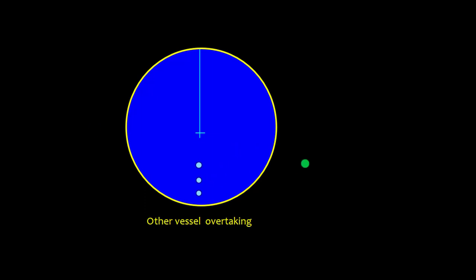Another overtaking scenario: another vessel is overtaking you from astern. You take at least three observations, bearing is constant, range decreasing. Per rule 19, avoid altering course towards a vessel abeam or above the beam. Since the vessel is neither side but right astern, you can alter course to either side. Expecting the overtaking vessel to keep to the starboard side, you can make a broad alteration to port and start a new plot. The overtaking vessel can also alter to starboard or port — both are permitted.